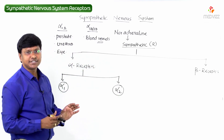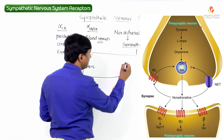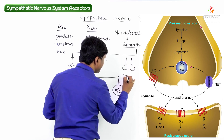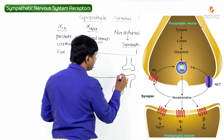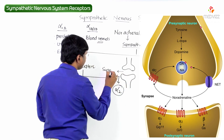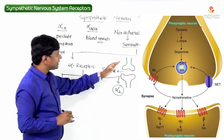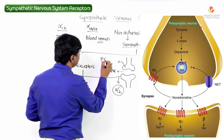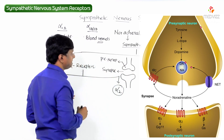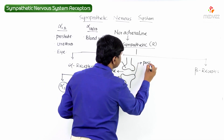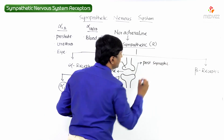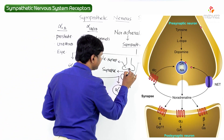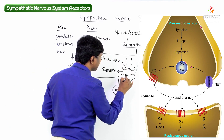Alpha 2 receptors are present on both the presynaptic and postsynaptic nerve terminals. The presynaptic nerve terminal is prior to the synapse, and the postsynaptic nerve terminal is after it. Alpha 2 receptors are present in both the presynaptic and postsynaptic nerve terminals.